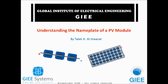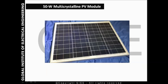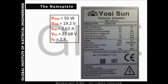Hello everyone, today I will be explaining how to understand the information shown on a nameplate of a PV module. We have here a 51 multi-crystalline PV module. If you look at the back of this module you will find the datasheet or the nameplate of it. In this nameplate we can see some information, but we will just talk about the most important information.